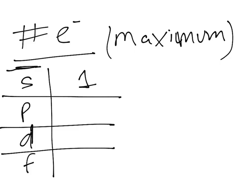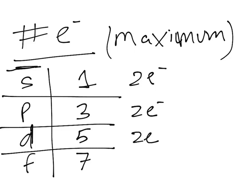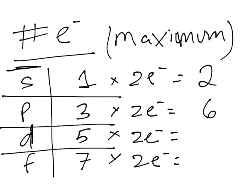P will have three—Px, Py, and Pz—and then D and F will have five and seven. I already said there will be two electrons max per orbital or per orientation. You can multiply this, and that will tell you the maximum number of electrons in that subshell. In the S subshell, there's a maximum of two electrons. In P, six. In D, ten. And in F, fourteen.